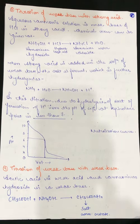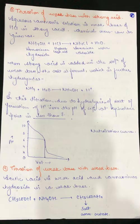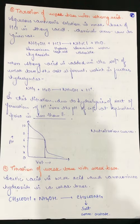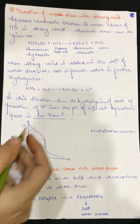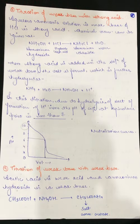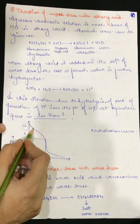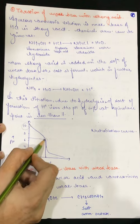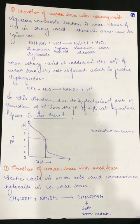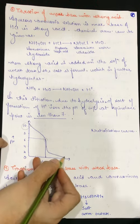Now the condition changes — we are titrating a weak base with a strong acid, so the neutralization curve starts from the upper direction because the pH will be more basic. Since it is a weak base, the pH value is around 10 — less basic in nature. The pH decreases as we add the strong acid, reaching a neutralization point, and then continues to decrease as the acidic nature of the solution increases.